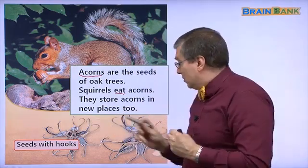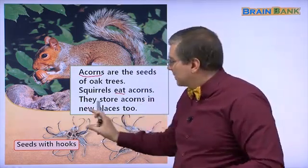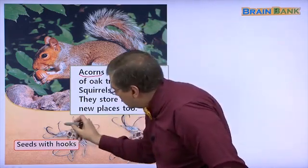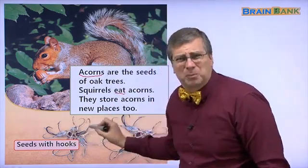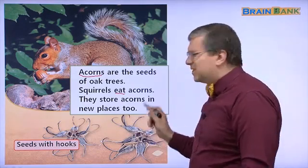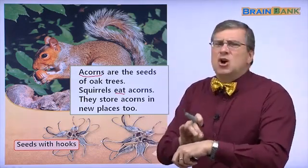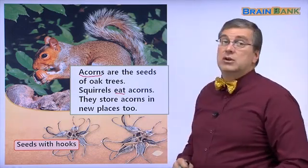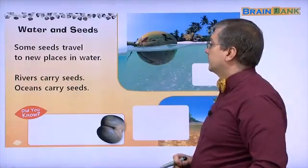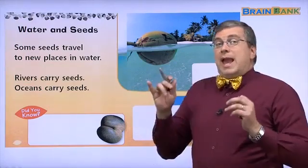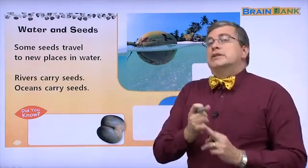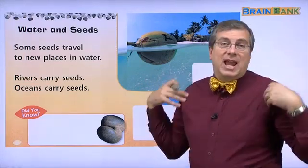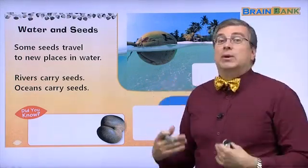Phew! Before, we talked about seeds with hooks. Usually seeds are very small, but they have hooks — they look very sharp. They are so small they don't hurt you; they just stick to your clothes and to your dog. Now, animals carry seeds, birds carry seeds, squirrels carry seeds, and dogs and other animals with fur carry seeds.